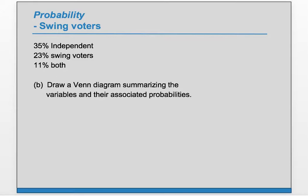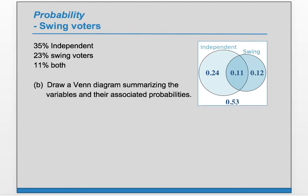Part B: draw a Venn diagram summarizing the variables and their associated probabilities. To draw a Venn diagram, always start by drawing a rectangle and inside draw circles corresponding to independent and swing. These overlap, and the 0.11 in the overlap corresponds to both. Because 35% should be in the whole independent circle and 11% are in the overlap, that leaves only 24% in the just-independent but not swing part.